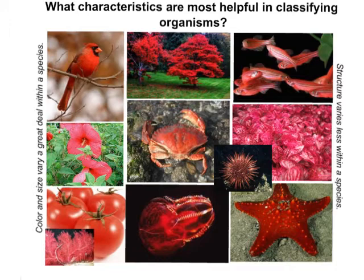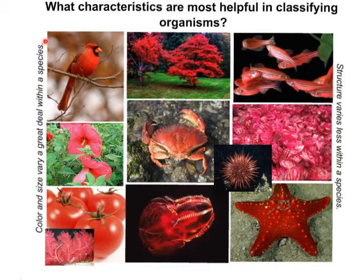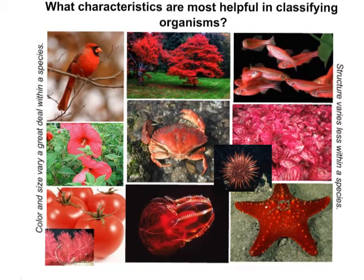What characteristics are most helpful in classifying organisms? That is a really good question because we've seen that there are some different ways of classifying. Here, color and size vary a lot within a species. If you look at all these different pictures here, they're all red — why not call all of them a species? But structure varies less within a species, so we often look at structure with more weight than color and size because they vary so much within a species.